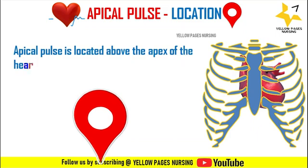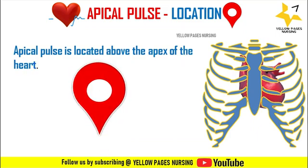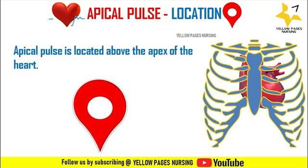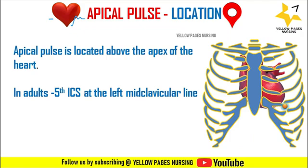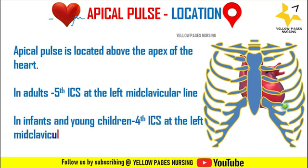Now, where to check the apical pulse. The apical pulse is located above the apex of the heart. The apex is the tip of the left ventricle that points downward on the left side of the chest. In adults, the apical pulse is located at the fifth intercostal space at the left mid-clavicular line, as shown in the picture. In infants and young children, it is located at the fourth intercostal space at the left mid-clavicular line. In certain conditions like dextrocardia, the apex of the heart is on the right side.